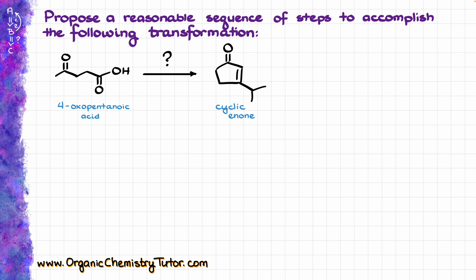In this case I can see that my final product is the alpha-beta unsaturated compound. We typically make those via the aldol condensation, so our starting material should be something like this, and in the last step of my synthesis I am creating the double bond between these carbons.